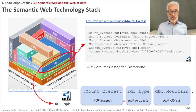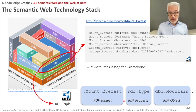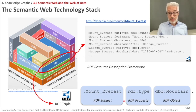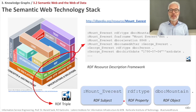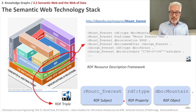To encode information, the semantic web technology stack uses RDF — the Resource Description Framework. This is a simplistic way to encode information: every fact you want to state is broken down into so-called triples. A triple consists, like a simple sentence in natural language, of subject, predicate, and object — though in the semantic web, predicate is called property. A statement can be expressed by a subject, a property, and an object.